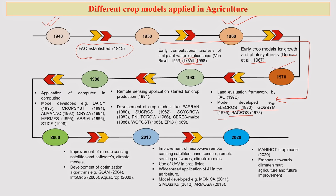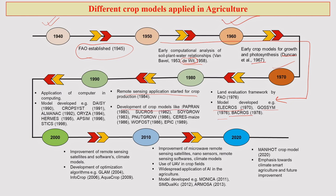Once the FAO land evaluation framework came into picture, land-related modeling work also started with focus on crop production and crop growth. We got ELECROS in 1970, GOSSIM in 1976, and BACROS in 1978. Between 1950 and 1970 to 1980, within just 30 years, so much development took place. In the 1980s, remote sensing came into picture in a very significant manner, and remote sensing applications in crop production and crop growth also started. Naturally, inputs from remote sensing started getting integrated into crop models. Models like PAPRAN, SUCROSE, SOYAGROW, PEANUT GROW, CERES MAIZE, OPHOST, and EPIC emerged.